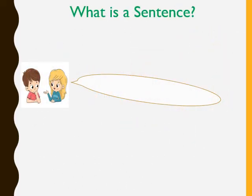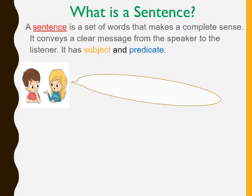Now let's find out what a sentence is. A sentence is a set of words that makes complete sense. It conveys a clear message from the speaker to the listener. It has a subject and a predicate. For example, 'Hyderabad is a beautiful city.' Here, Hyderabad is the subject, and 'is a beautiful city' is the predicate, and it also conveys a complete message.